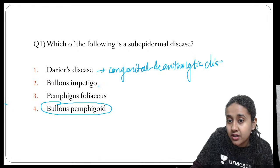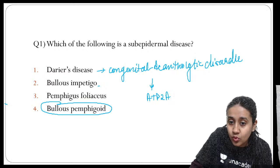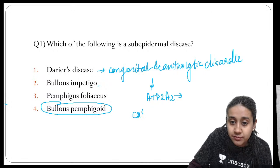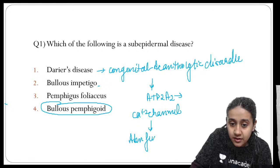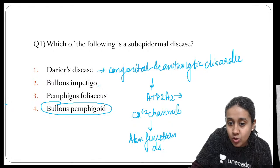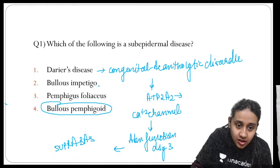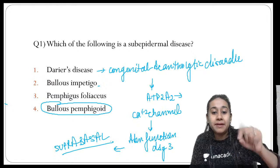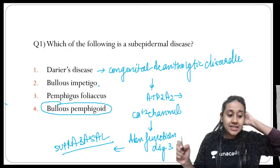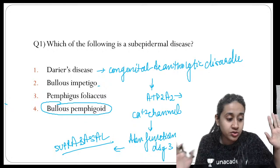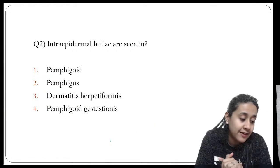In Darier's disease, there is deficiency of ATP2A2, which is responsible for a calcium channel. This causes abnormal function of desmoglein 3, leading to a suprabasal cleft. So in Darier's disease, you will see intraepidermal split at the suprabasal level.